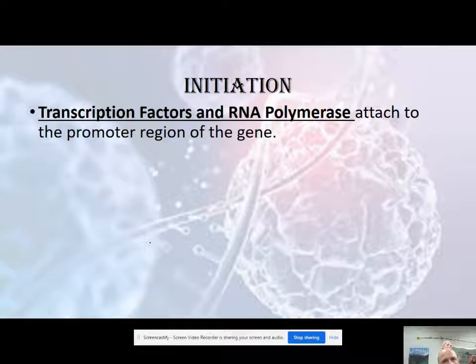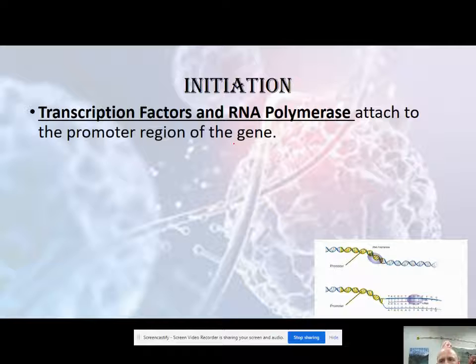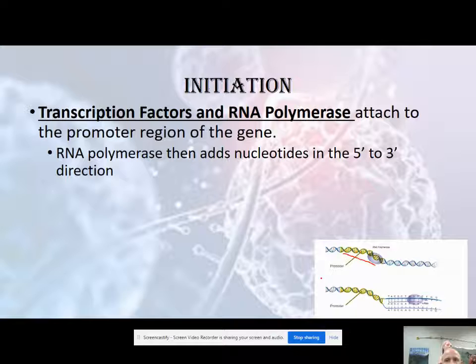Initiation starts with transcription factors and something called RNA polymerase that attach to the promoter region of a gene. Every gene is going to have a promoter region — a sequence that's going to attract this enzyme called RNA polymerase, much like DNA polymerase. This enzyme also opens up the DNA, so it has a helicase-like function. RNA polymerase attaches to the promoter region and adds nucleotides in the five-prime to three-prime direction, just like DNA polymerase does.